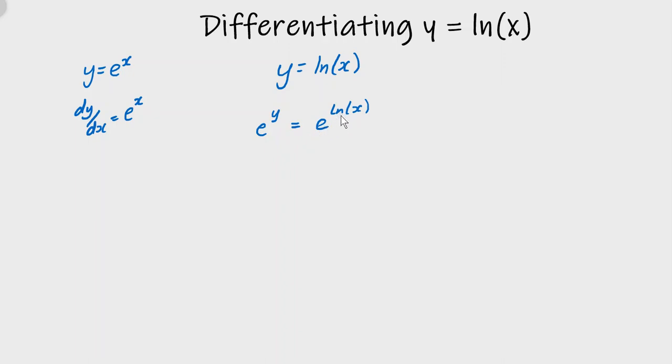Now since e to the power of and natural logarithm of are inverse functions, taking the natural log of x and then raising e to that power will just give us x since these are inverse functions. So we end up with x equals e to the power y.